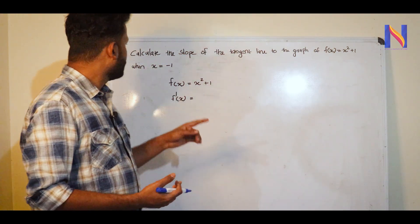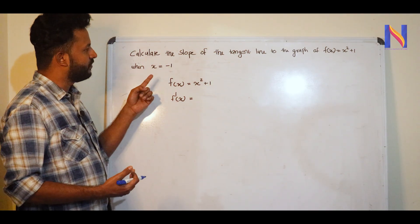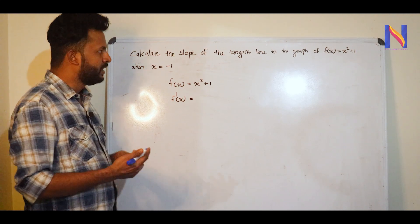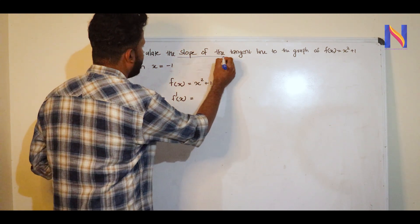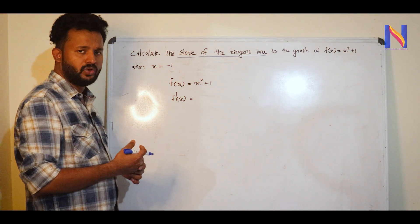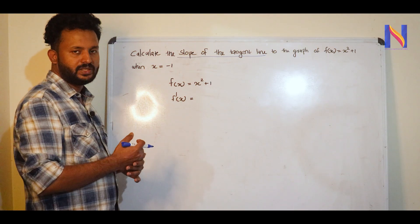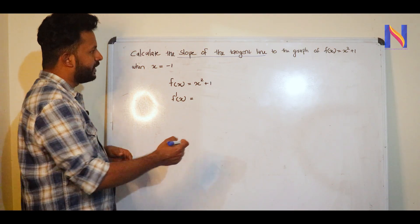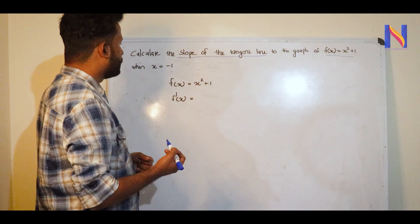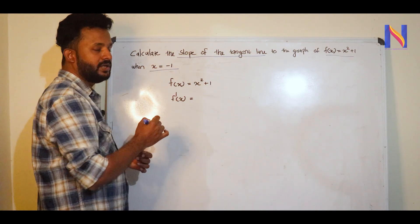The first question is: calculate the slope of the tangent line to the graph of f(x) = x² + 1 when x = -1. This is the slope of the tangent line. The function is f(x) = x² + 1, and we are considering the condition when x = -1.